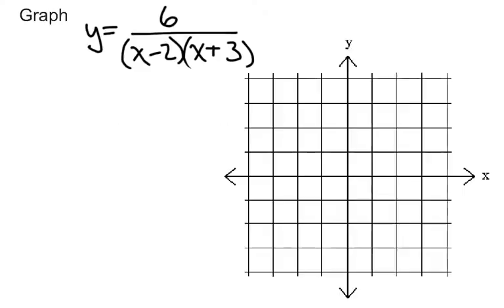Last time we were looking at graphing rational functions where there's one vertical asymptote and one horizontal asymptote. Now I want to look at how we can change the function to produce multiple vertical asymptotes.